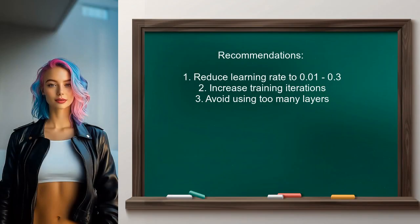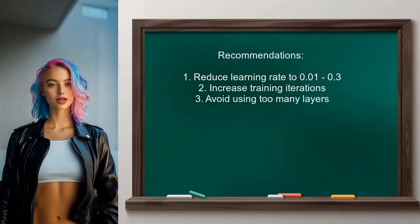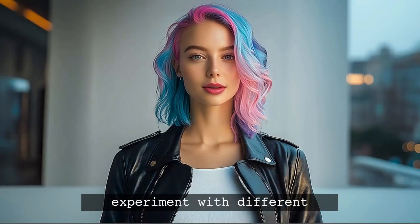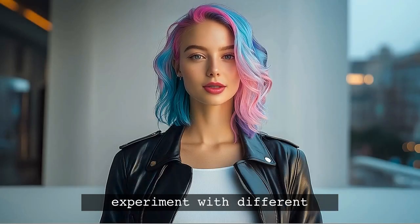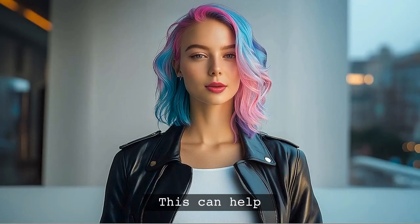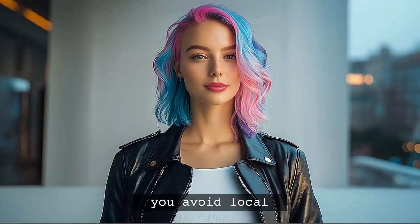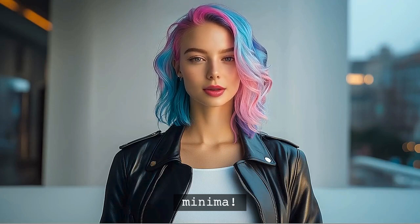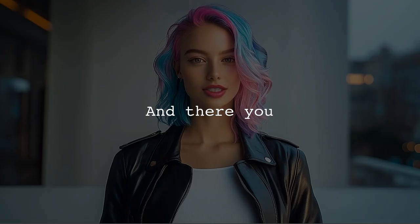Additionally, it's recommended to reduce your learning rate to a range between 0.01 and 0.3, and to increase the number of training iterations significantly. 10 layers may be excessive for your model. Here's the crucial tip: regularly experiment with different architectures and hyperparameters. This can help you avoid local minima and improve your model's performance.